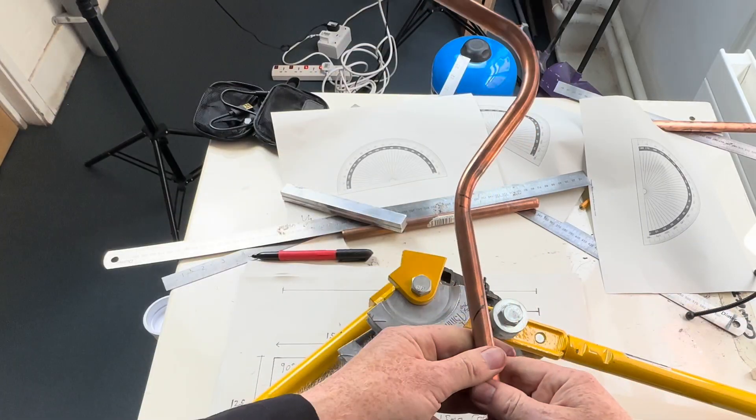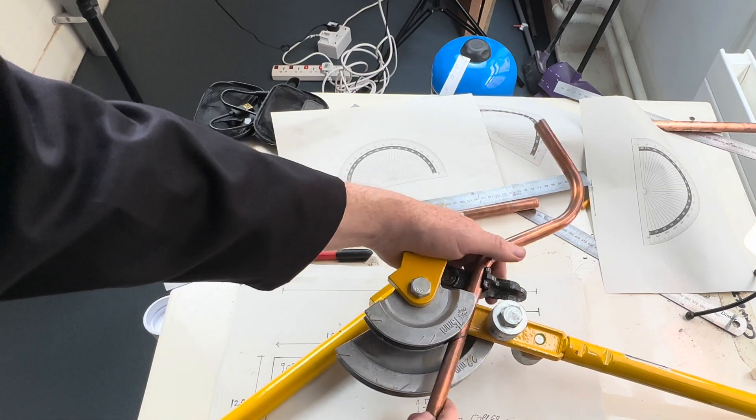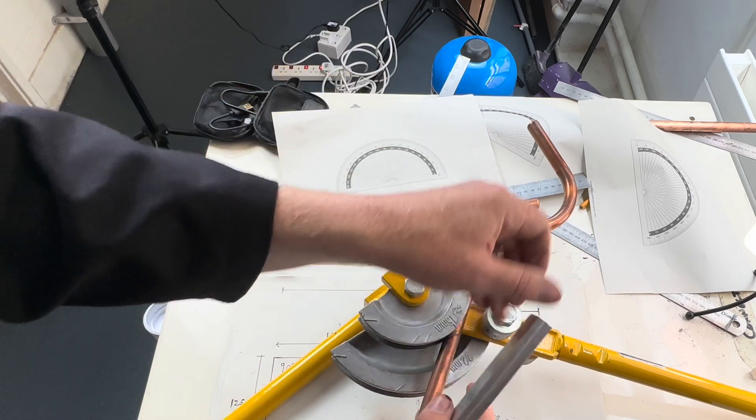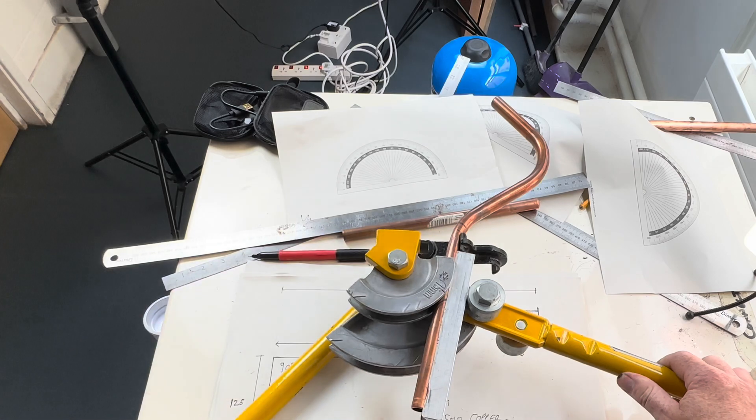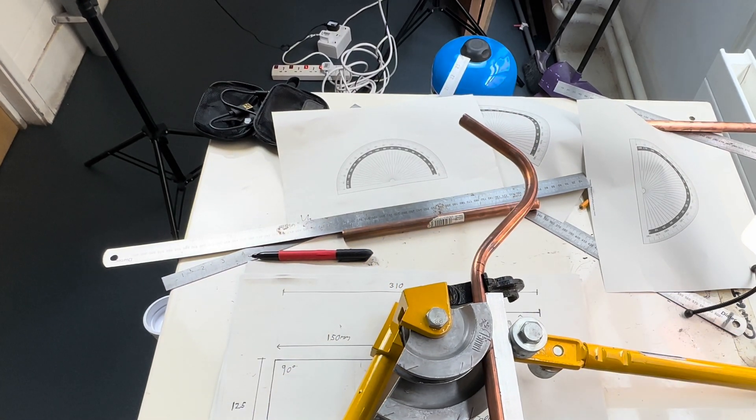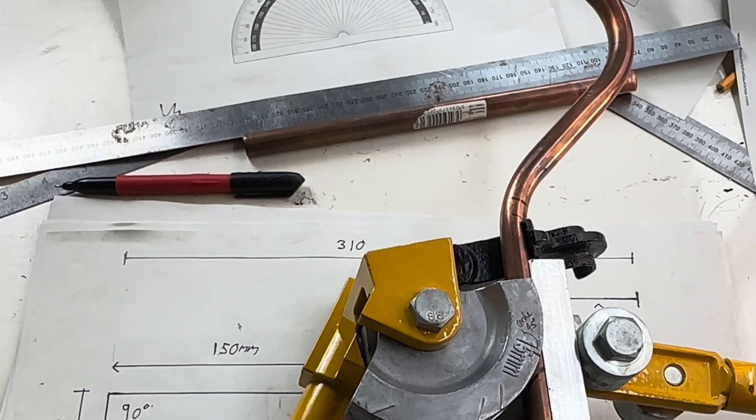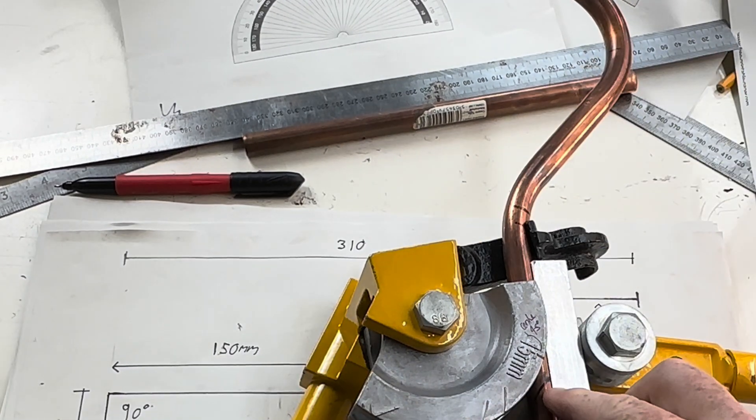We then put our work back into the pipe bender so it looks like this. And what we need to do is the line we just drew, we need to make sure that is touching the edge of the former.